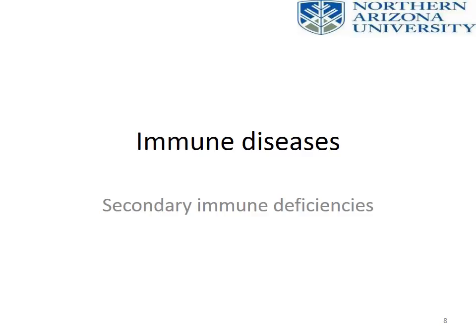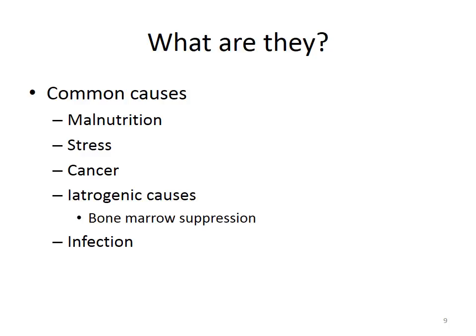Switching gears now to secondary immune deficiencies — these are disease states caused as a result of something else. Common causes include malnutrition, stress, cancer, iatrogenic causes, and infection. With malnutrition, insufficient caloric intake means the immune system lacks energy to function normally. Additionally, depleted zinc intake will deplete B and T cell production, since zinc is an important facilitator in the maturation of B and T lymphocytes — which is why many over-the-counter remedies include zinc supplementation.